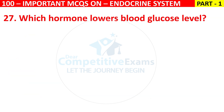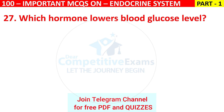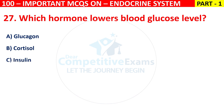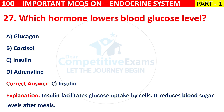Q27. Which hormone lowers blood glucose level? Options are glucagon, cortisol, insulin, or adrenaline. The right answer is C, that is insulin. Insulin facilitates glucose uptake by cells. It reduces blood sugar level after meals.